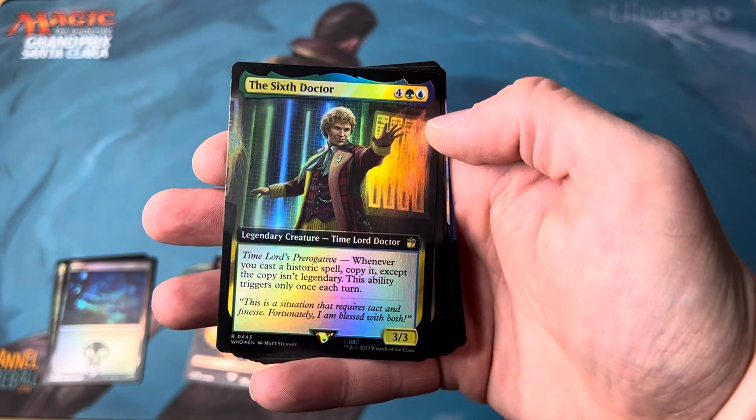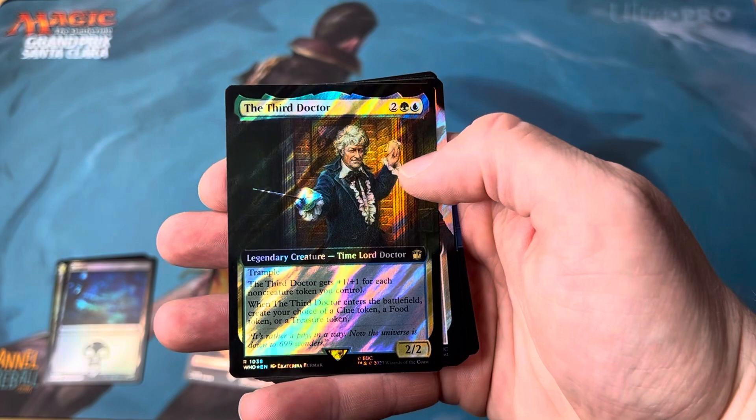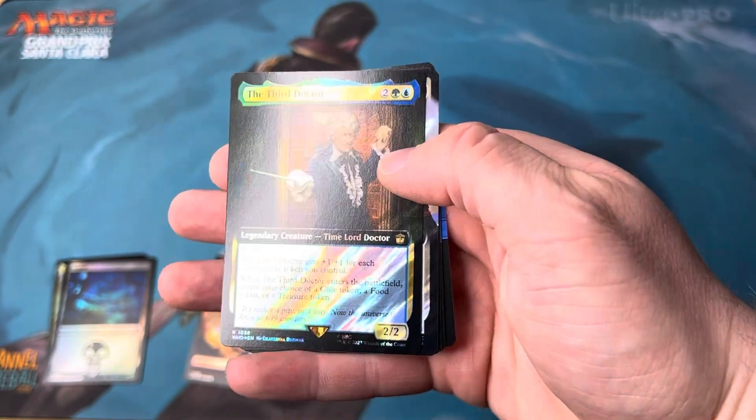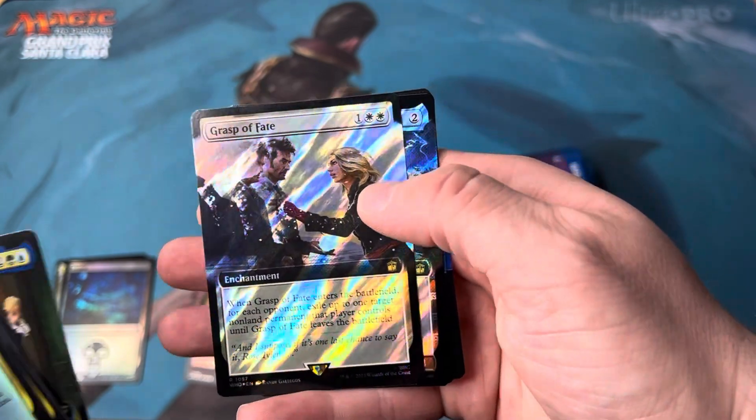Oh another Doctor. Fantastic. I'm loving this artwork. Choked Estuary. The third Doctor. Very cool. Surge Foil there. Grasp of Fate. Another beautiful Surge Foil.